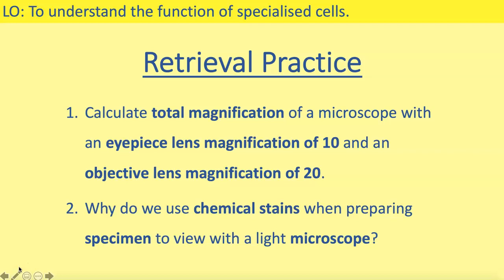Now that you've got something to write with and something to write on, have a go at these retrieval practice questions — use your knowledge organiser to help you. Question one: calculate the total magnification of a microscope with an eyepiece lens magnification of 10 and an objective lens magnification of 20. Question two: explain why we use chemical stains when preparing specimens to view with a light microscope. Take a few minutes, write down your answers and working out, then pause the video.